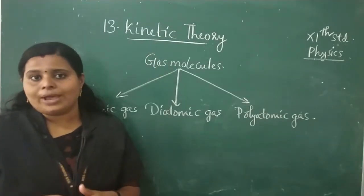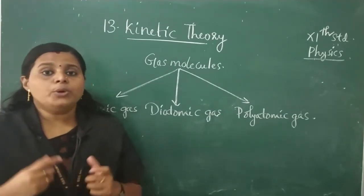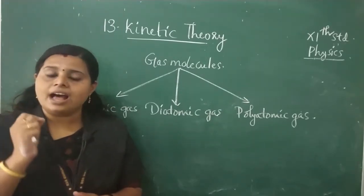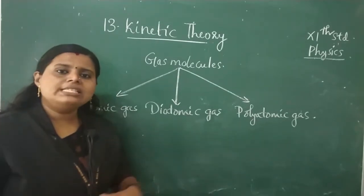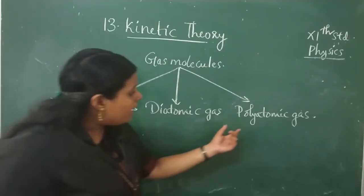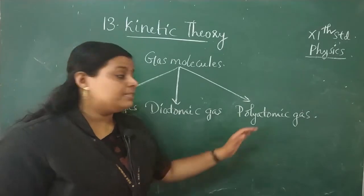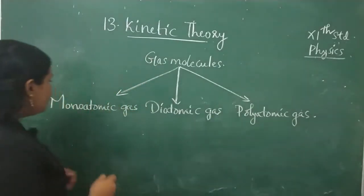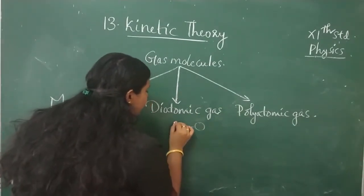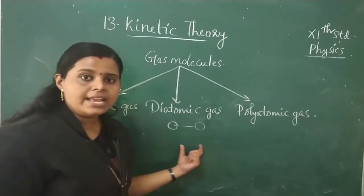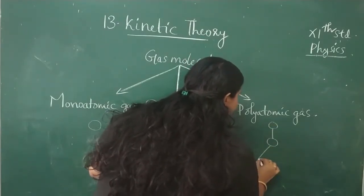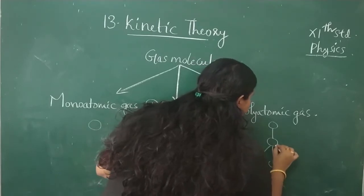A monoatomic molecule is made up of one atom. A diatomic gas or diatomic molecule consists of 2 atoms. And a polyatomic gas consists of more than 2 atoms. A monoatomic or diatomic molecule is connected to a random atom arrangement, while a polyatomic molecule has a more complex structure.